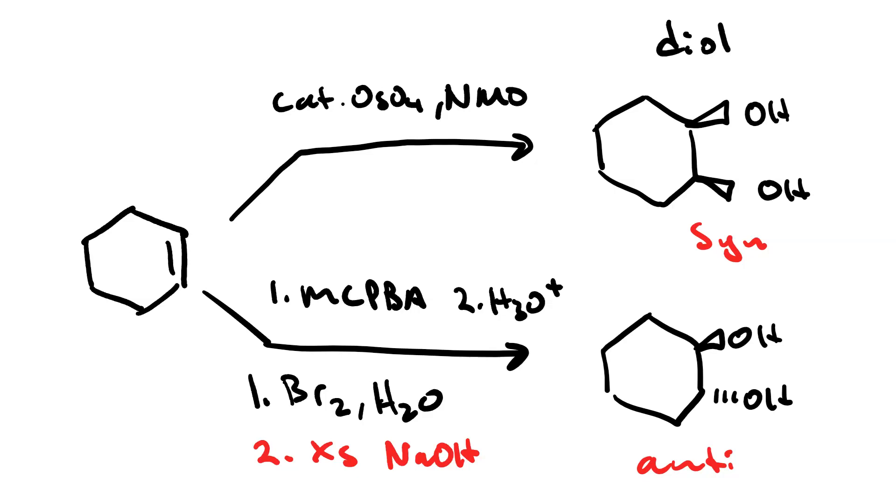Either way, you get the anti-diol. So we can make the syn-diol using osmium tetroxide or potassium permanganate. We make the anti-diol by going through the epoxide, either peroxyacid followed by acid or make the halohydrin and then use excess hydroxide.